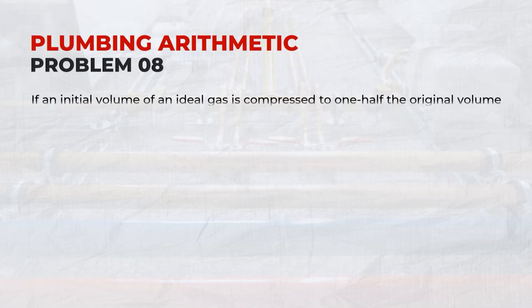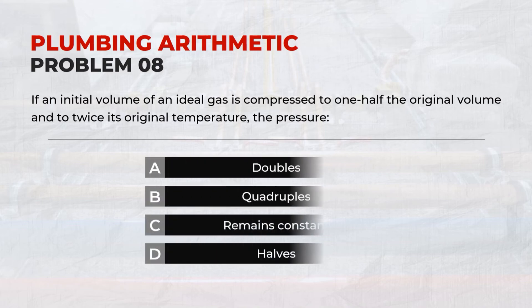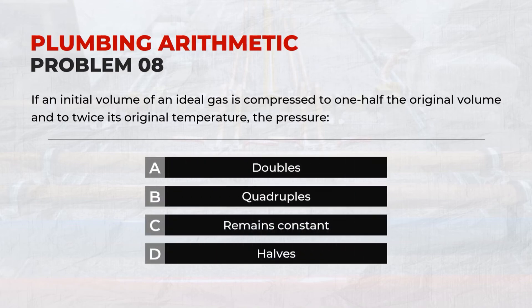If an initial volume of an ideal gas is compressed to one-half the original volume and to twice its original temperature, the pressure: B. Quadruples.